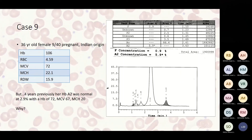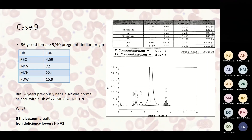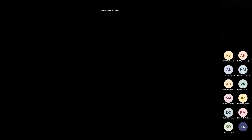Case nine: a 36-year-old female of Indian origin, nine weeks pregnant, with microcytic hypochromic anaemia. Her A2 is raised at 5.9% on HPLC, consistent with beta thalassaemia trait. However, four years prior her Hb A2 was within the upper normal range at 2.9% with a more marked microcytic hypochromic anaemia. This is a case of iron deficiency lowering the haemoglobin A2, masking beta thalassaemia trait — fortunately diagnosed during her pregnancy.